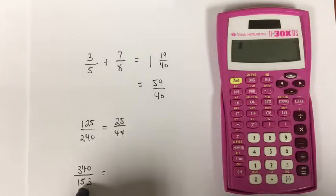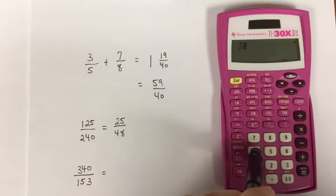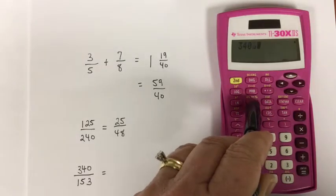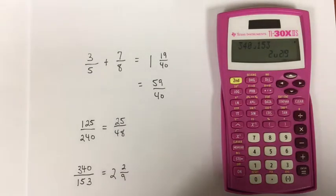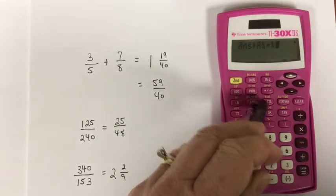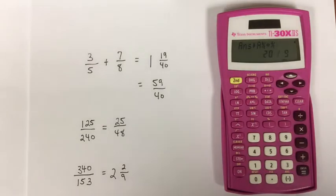Let's say we want to simplify this fraction. I'm going to enter 340 fraction 153, and notice that the result comes out in mixed number form, and then I can convert to improper form by using the second function of that button, and I see that it's 20 over 9.